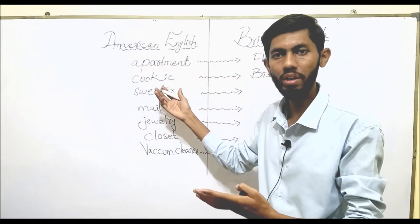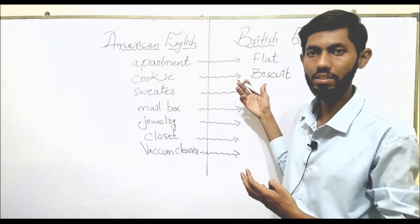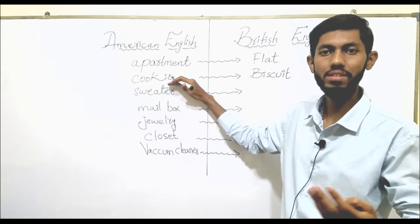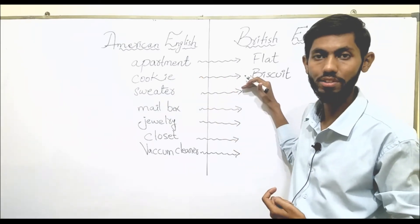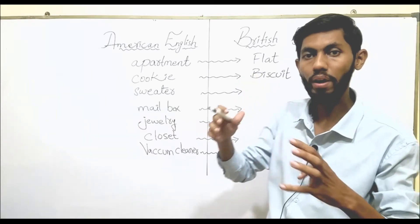For example, I like to eat cookies. I like to eat biscuits. My little sister likes to eat cookies. My little sister likes to eat biscuits. So in this way you can make sentences.